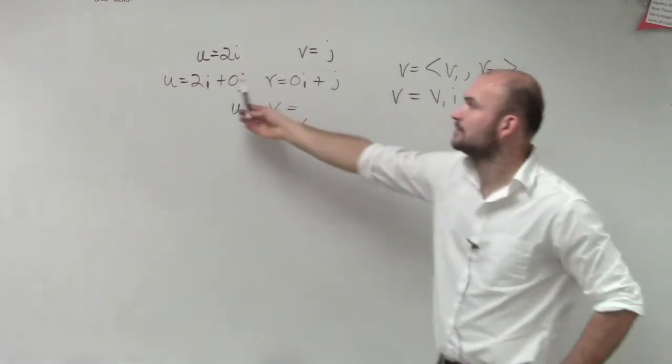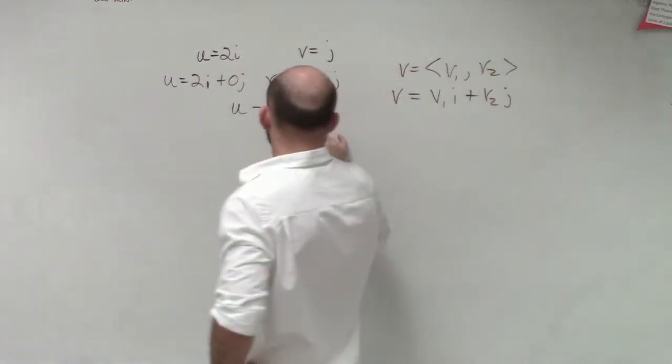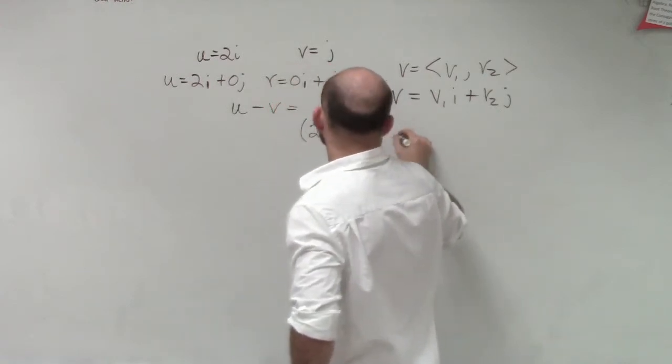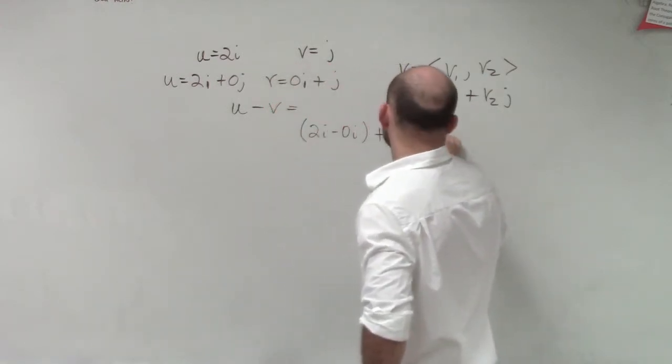Well, now we're having it as a linear combination, we're just going to do 2i minus 0i plus 0j minus j.